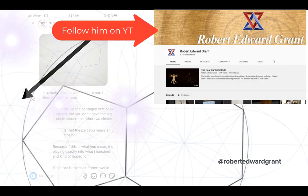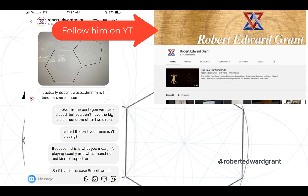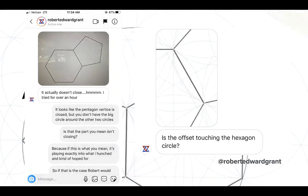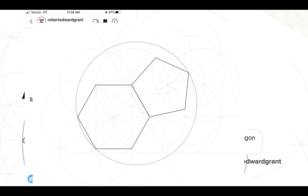And as a matter of fact, when he first started, he said it actually doesn't close. I tried for over an hour and instinctively I thought that would have meaning into the way I was thinking about applying this to the Great Pyramid. I thought it is quite possible that it won't close. But he worked harder at it. We talked a little bit. He asked me about the touching the hexagon circle and whatnot. But he went back, as they say, to the drawing board. And there's the beautiful construction he came up with.